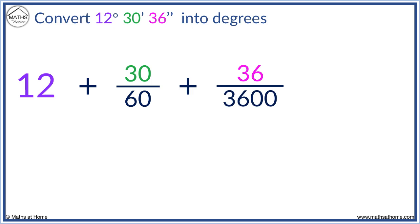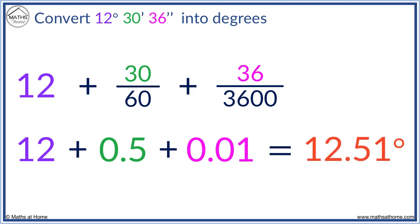Now we work this out. We have 12. 30 divided by 60 equals 0.5. And 36 divided by 3,600 equals 0.01. Adding these results, we obtain 12.51 degrees.